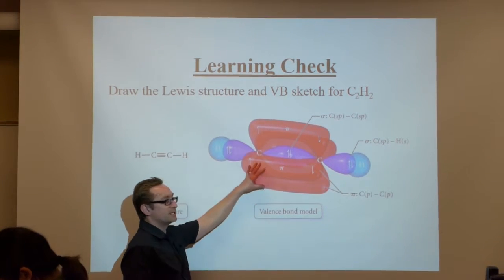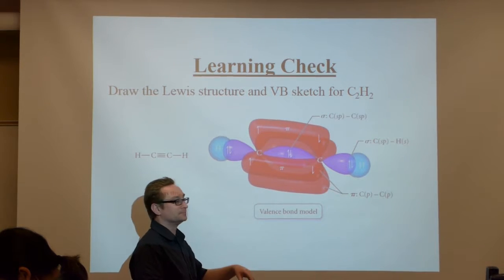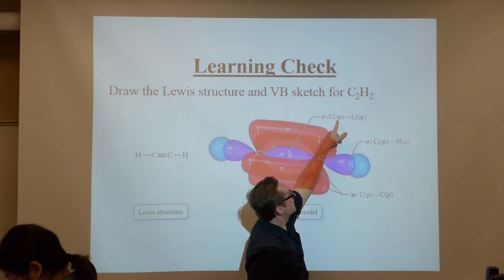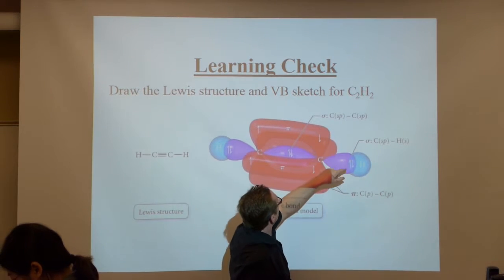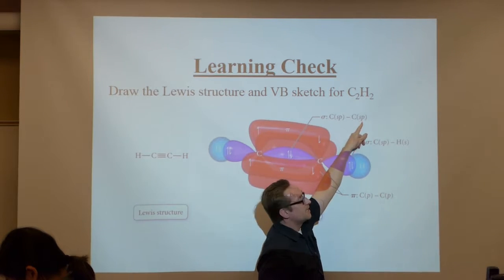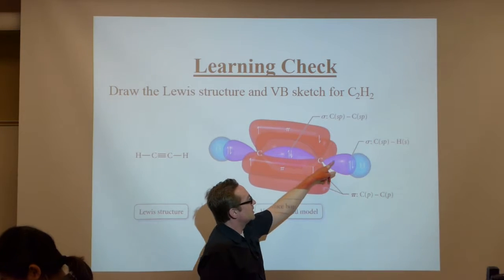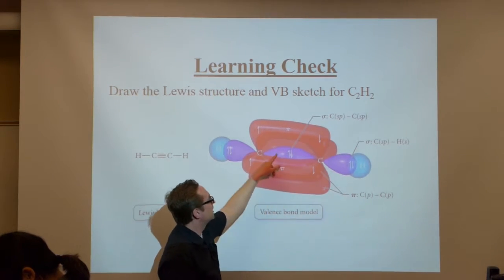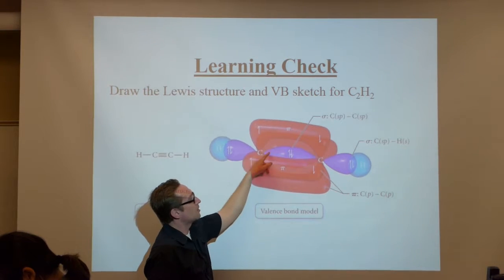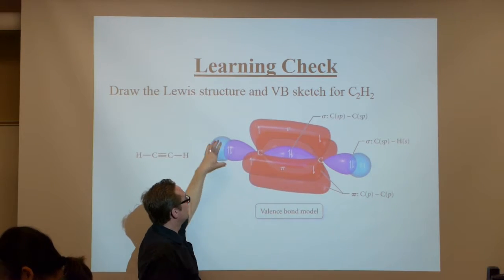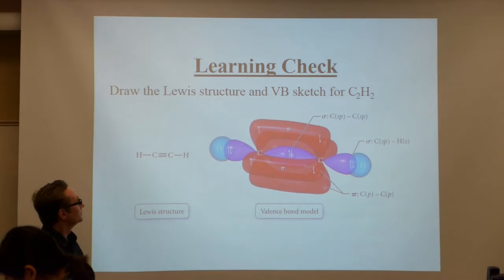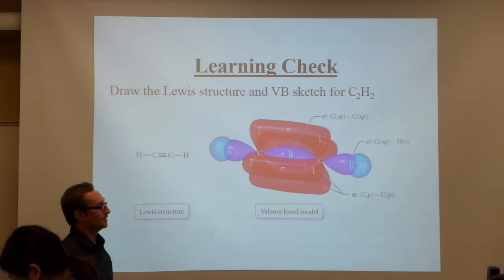So now I'm sure you can see where I get the analogy of the hot rod and fun from. Sigma, SP hybridized with another carbon that was also SP hybridized. Here's the two lobes from the hybridized, and here's the other two lobes of the other carbon, which is also SP hybridized. And here's the hydrogens. Triple bond.